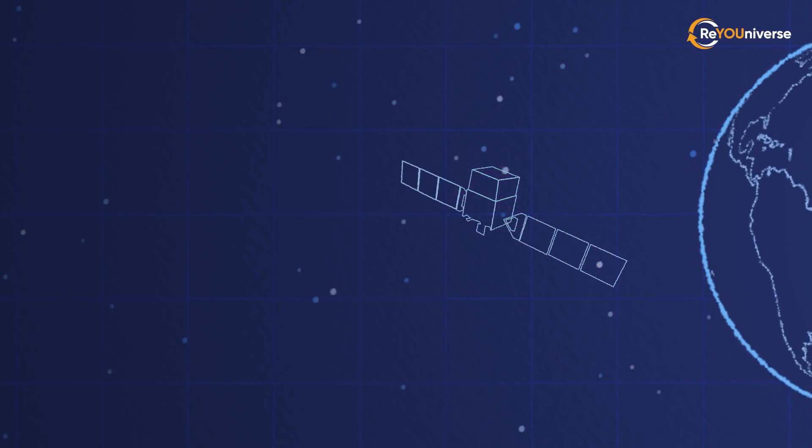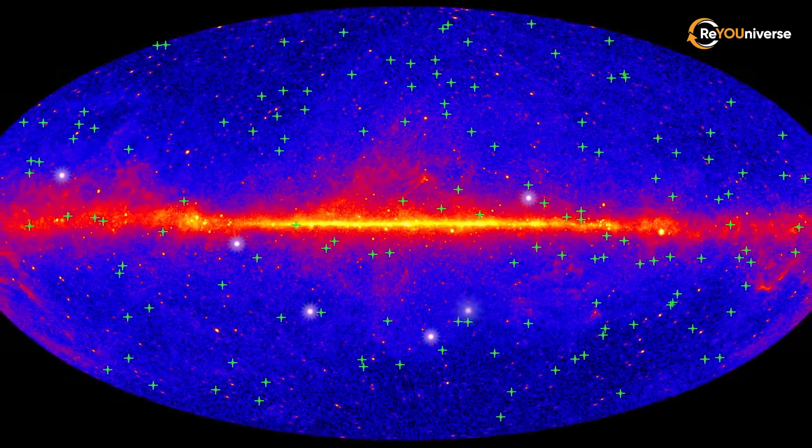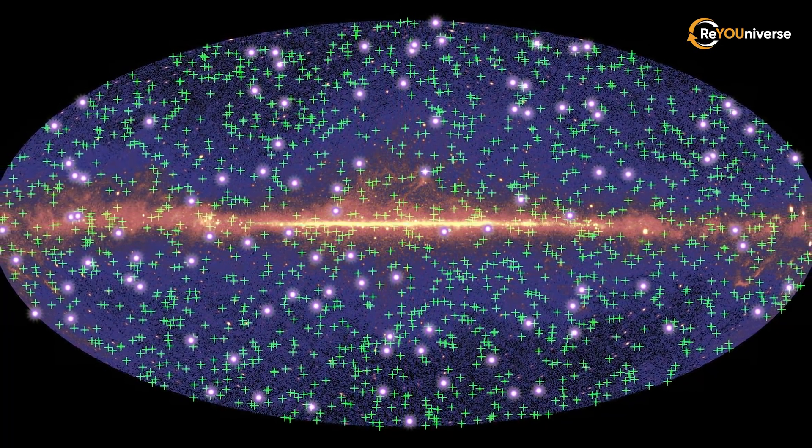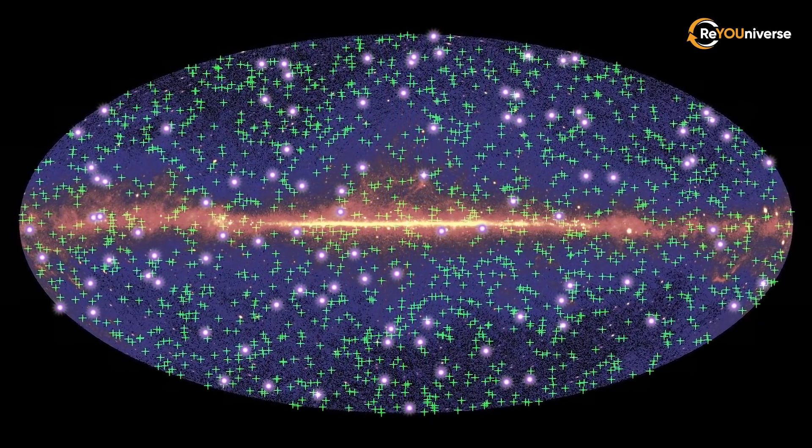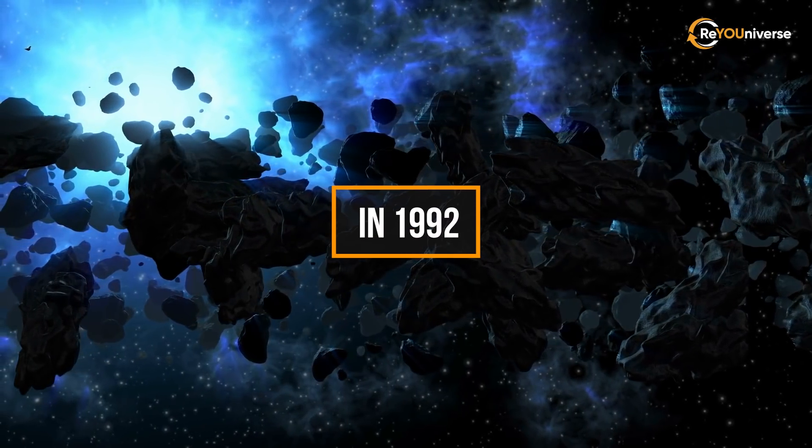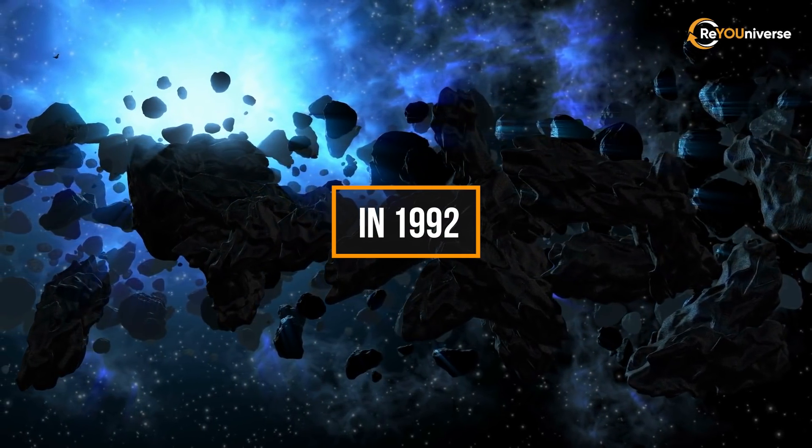Scientists estimated the coordinates of the radiation source, but no one could explain the nature of this phenomenon. Finally, in 1992, astrophysicists Robert Duncan and Christopher Thompson came up with a promising theory.